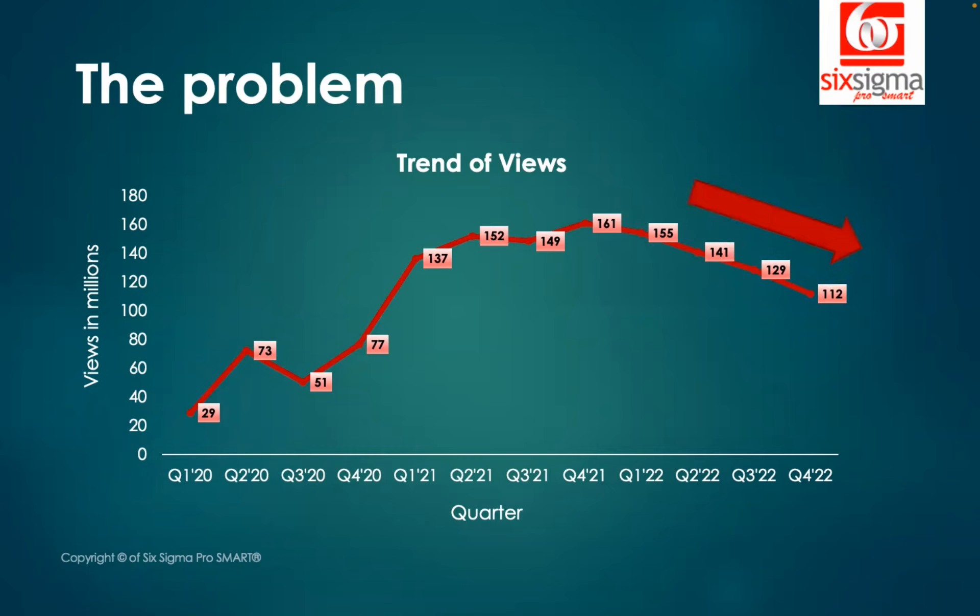So this is a concern. This shows that the user engagement is dropping. Knowing this problem, how are we going to put it in words? I'll show you some examples.